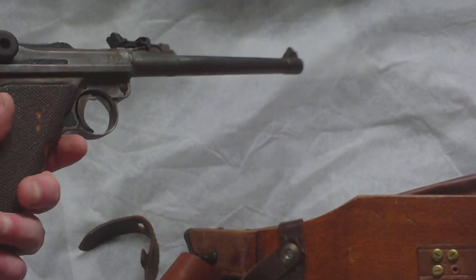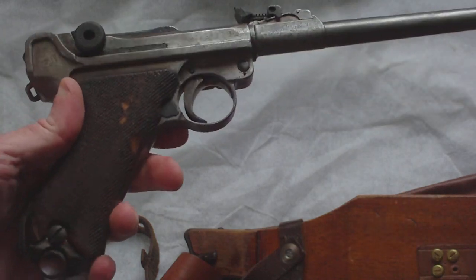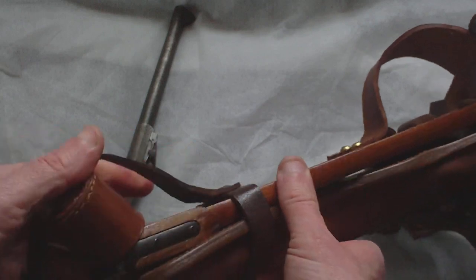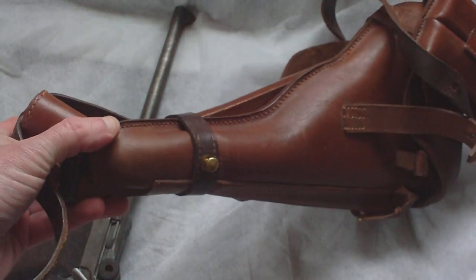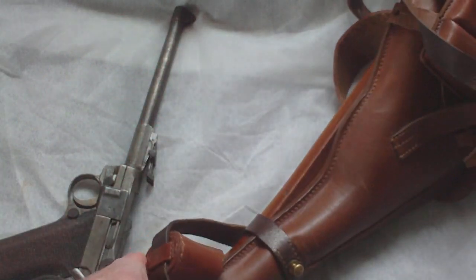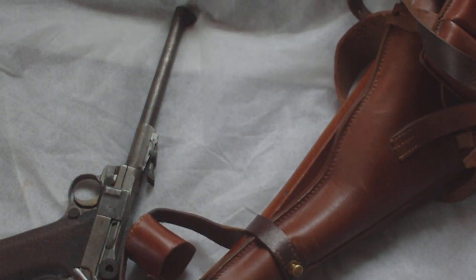So that's the ins and outs of the artillery Luger, the board stock, the spare mag pouch, shoulder strap and holster.